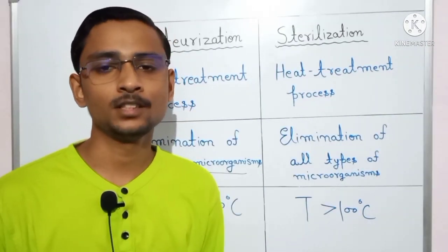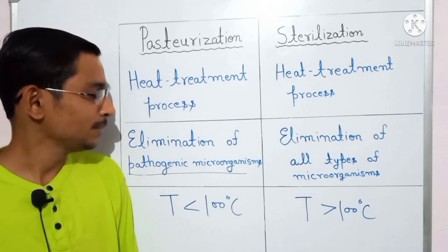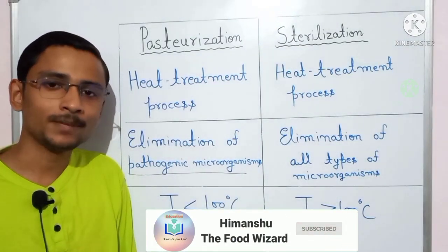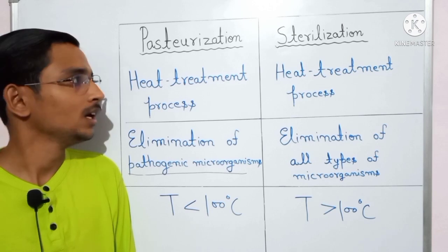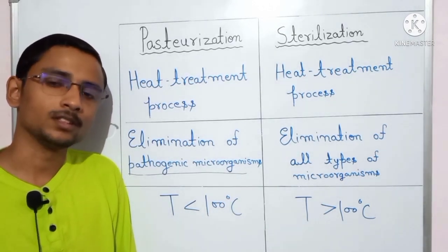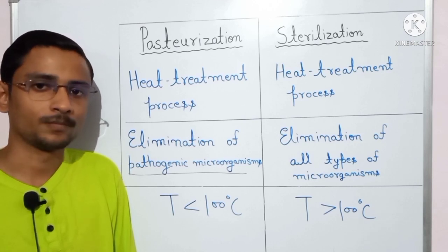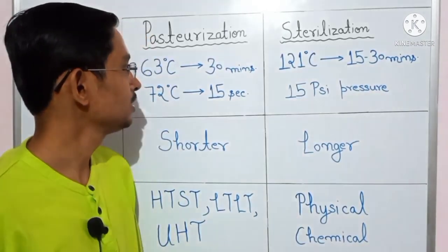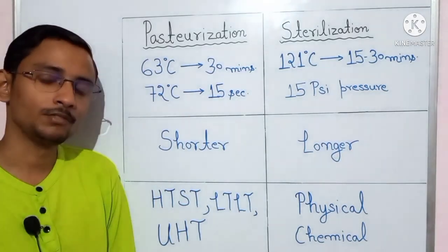To summarize in Hindi: pasteurization is a heat treatment process involving the elimination of pathogenic microorganisms, operating at temperatures less than 100 degrees Celsius. Sterilization also involves spores and uses temperatures greater than 100 degrees Celsius. The temperature and time combinations for pasteurization are: 63 degrees Celsius for 30 minutes, and 72 degrees Celsius for 15 seconds.